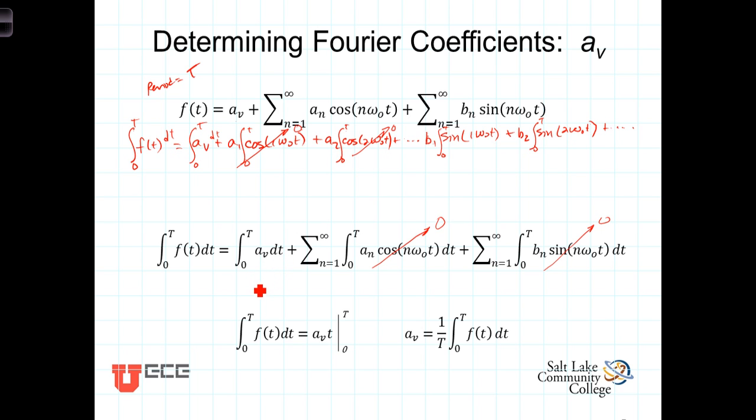Now, when you integrate the right-hand side here, you get a sub v times t evaluated at the limits zero and T, which is equal to a sub v times T, or this here is equal to a sub v times T. Now, we can solve for a sub v by dividing both sides of this equation by T, and we get, then, that a sub v is equal to one over T times the integral from zero to T of f of t. And there we have the way that we'll go about calculating these a sub v terms.